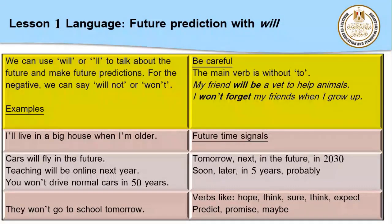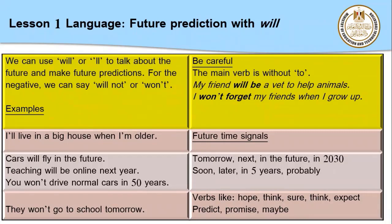Important: the main verb after 'will' is always without 'to' — the infinitive. Examples: 'My friend will be a vet to help animals' — here 'be' is the base form of am/is/was. 'I won't forget my friends when I grow up.' Time signals for the future tense include: tomorrow, next week, next year, next Friday, next September, in the future, in twenty/thirty, soon, later, in five years (meaning after five years), and probably.